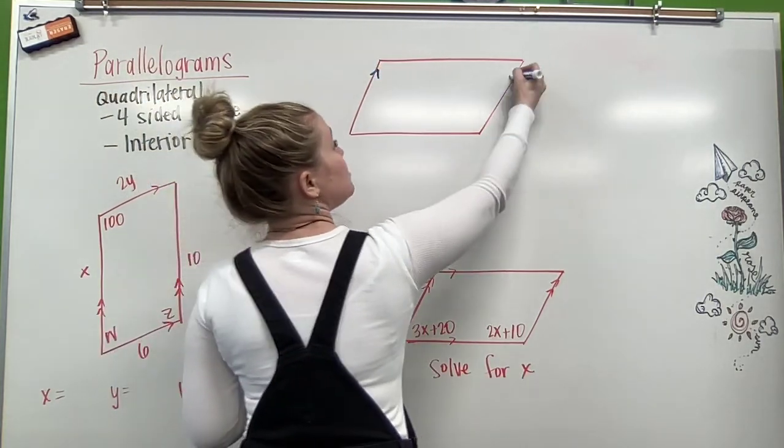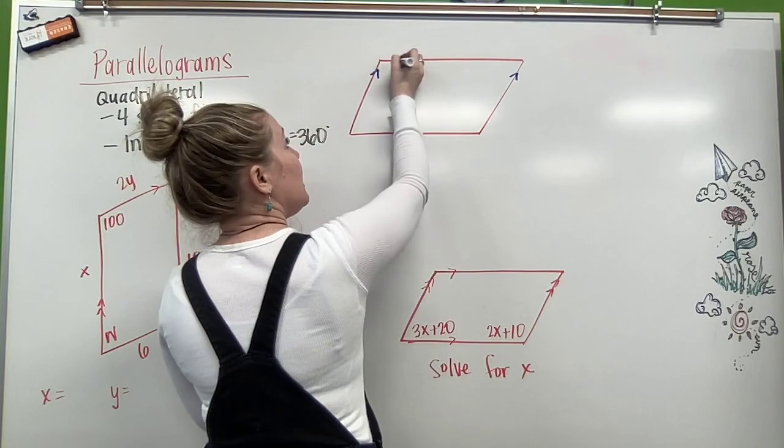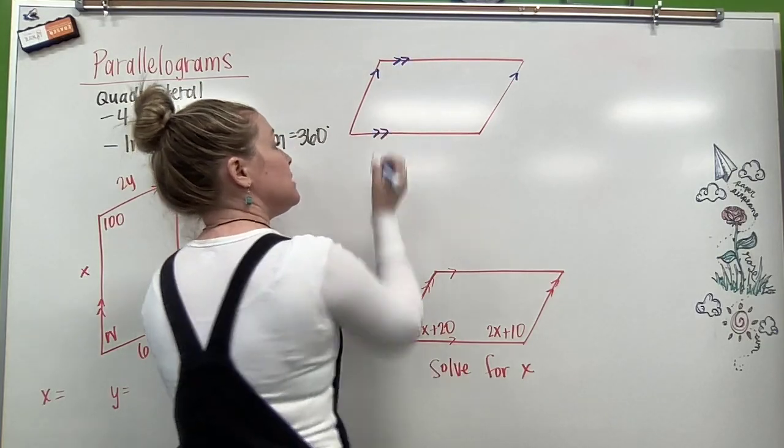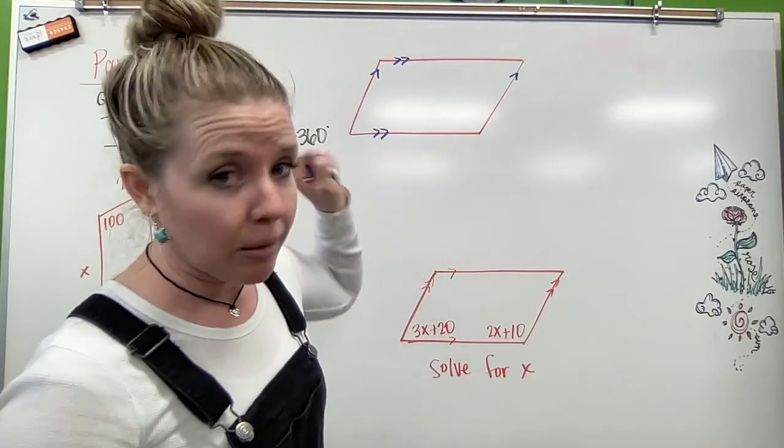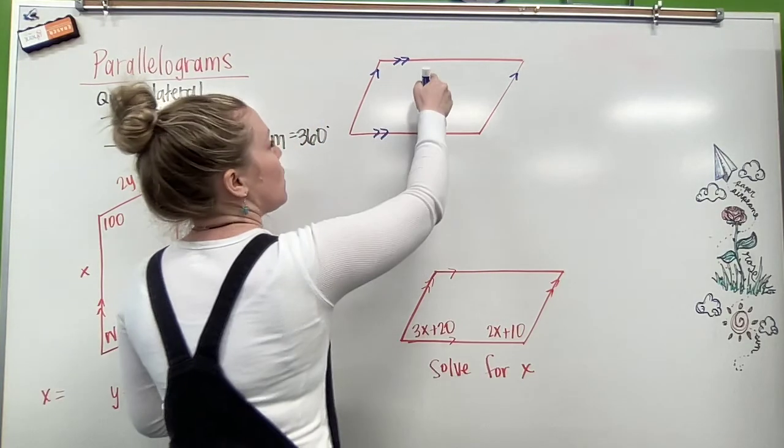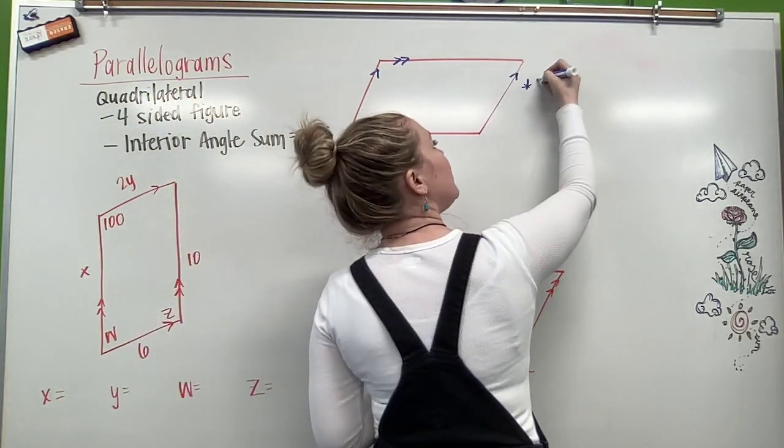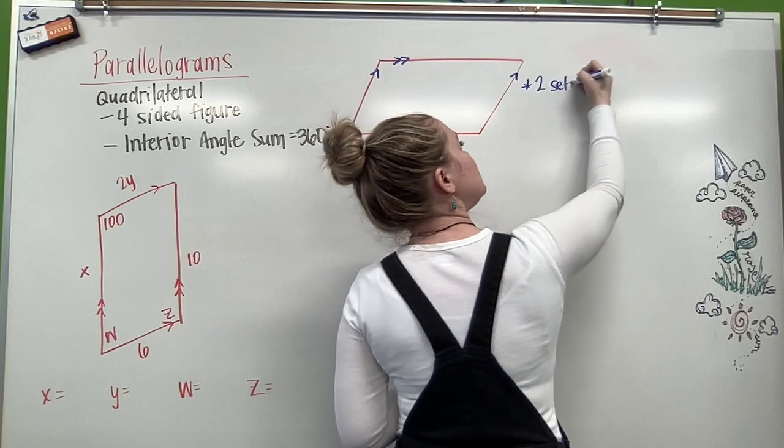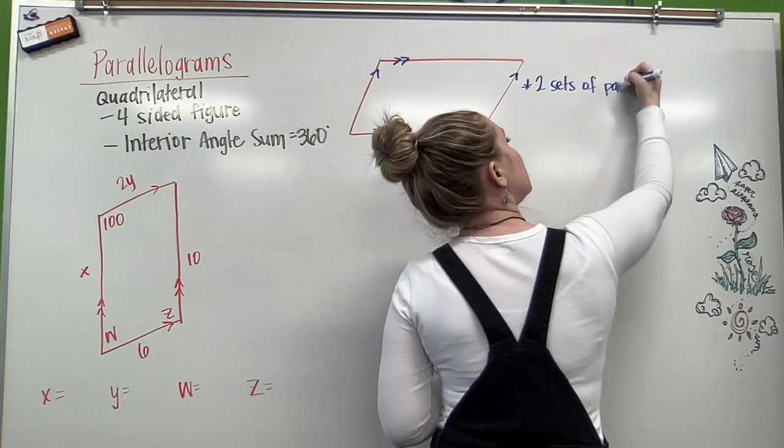So this side is parallel to this side, and this side is parallel to this side. Don't judge the drawing, I'm only human, okay? So our parallelograms, to know it's a parallelogram, we're going to have two sets of parallel sides.